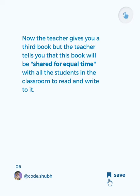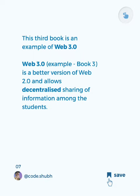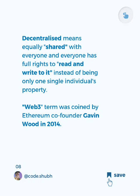Now the teacher gives you a third book, but the teacher tells you that this book will be shared for equal time with all the students in the classroom to read and write to it. This is the Web 3.0 example. Book 3 is a better version of Web 2.0 and allows decentralized sharing of information among the students. Decentralized means equally shared with everyone, and everyone has full rights to read and write to it, instead of being only one single individual's property. The Web 3.0 term was coined by Ethereum co-founder Gavin Wood.